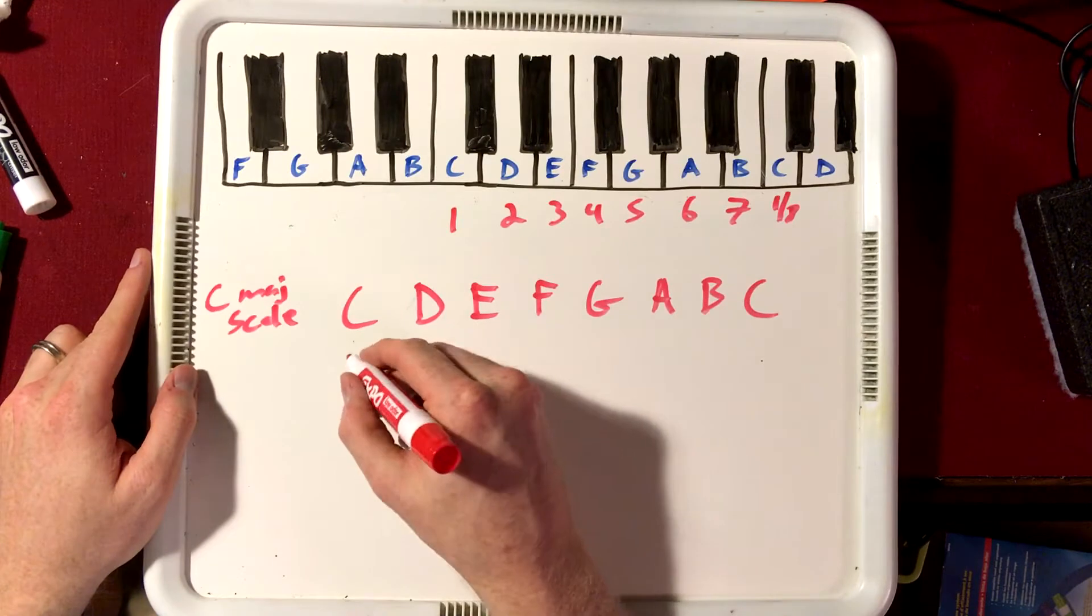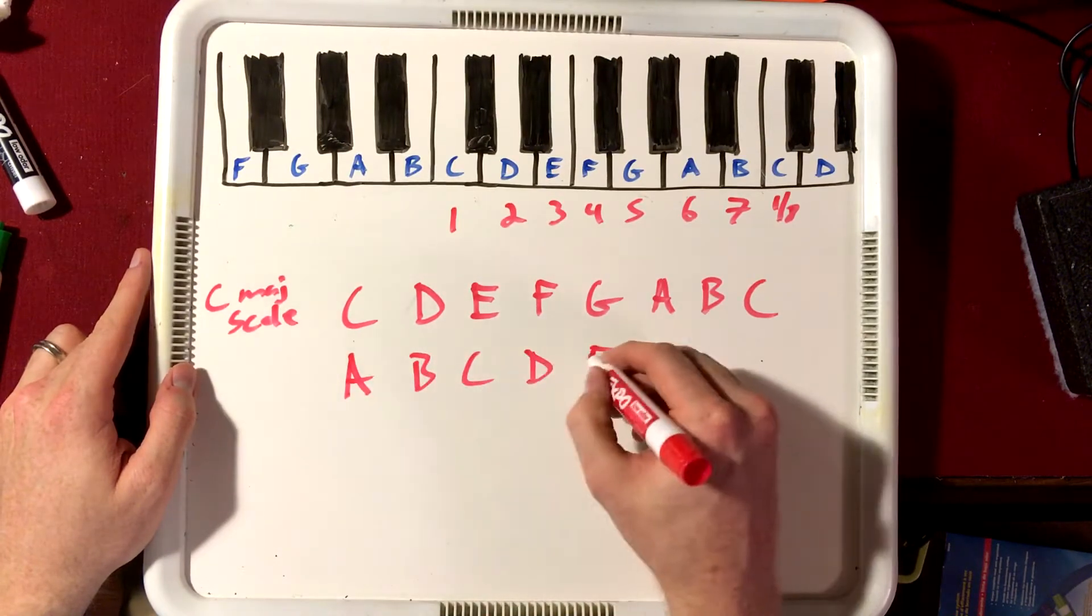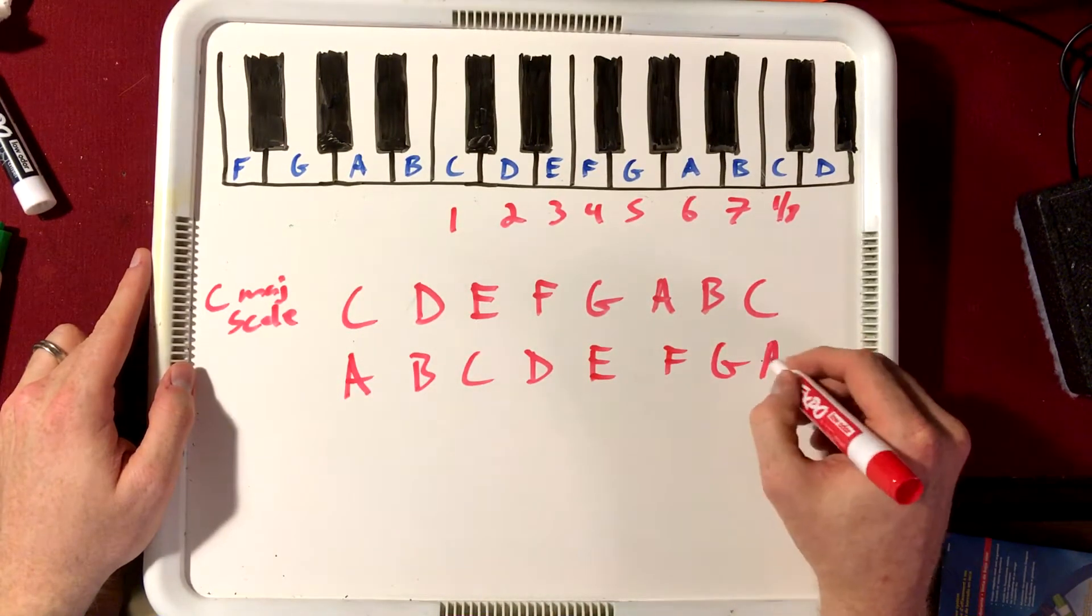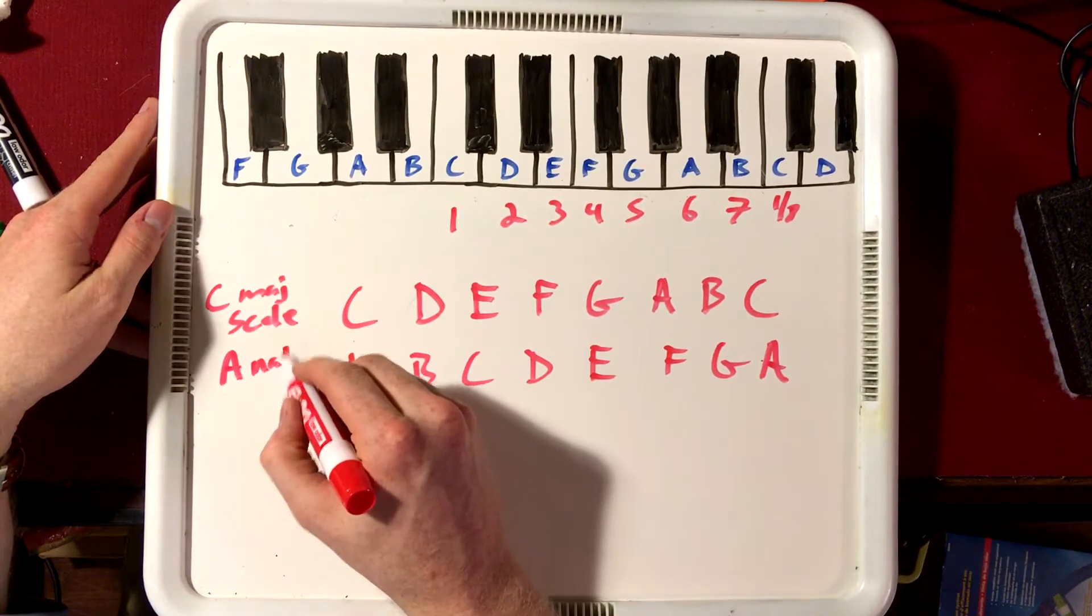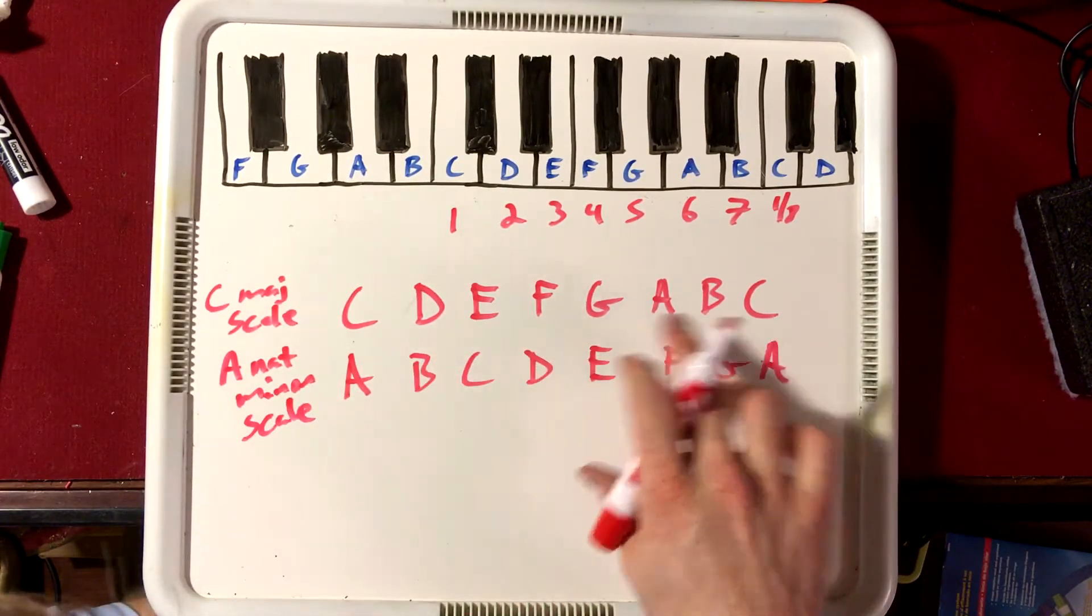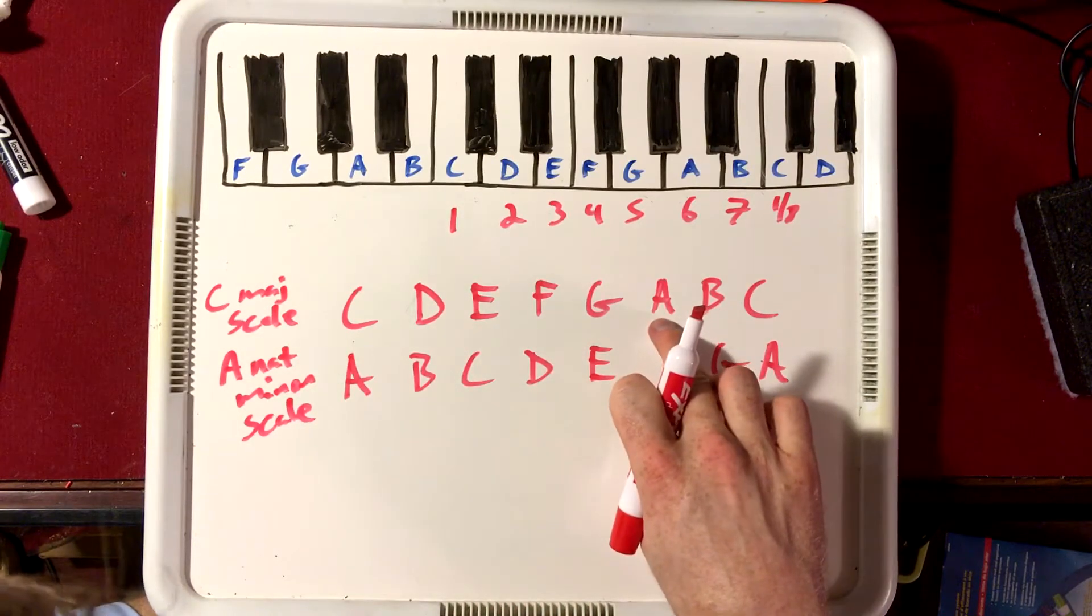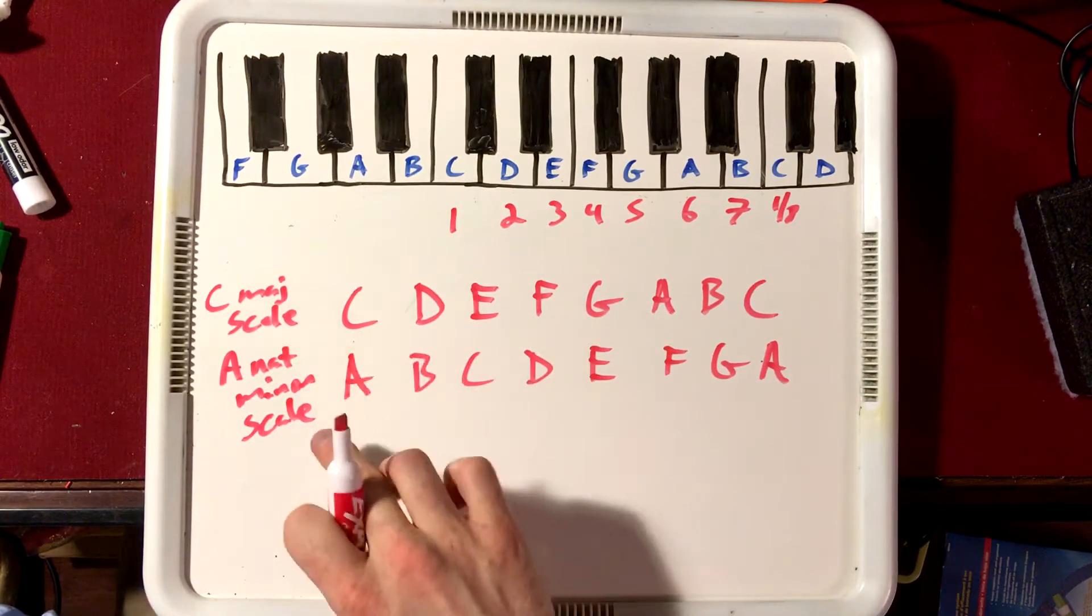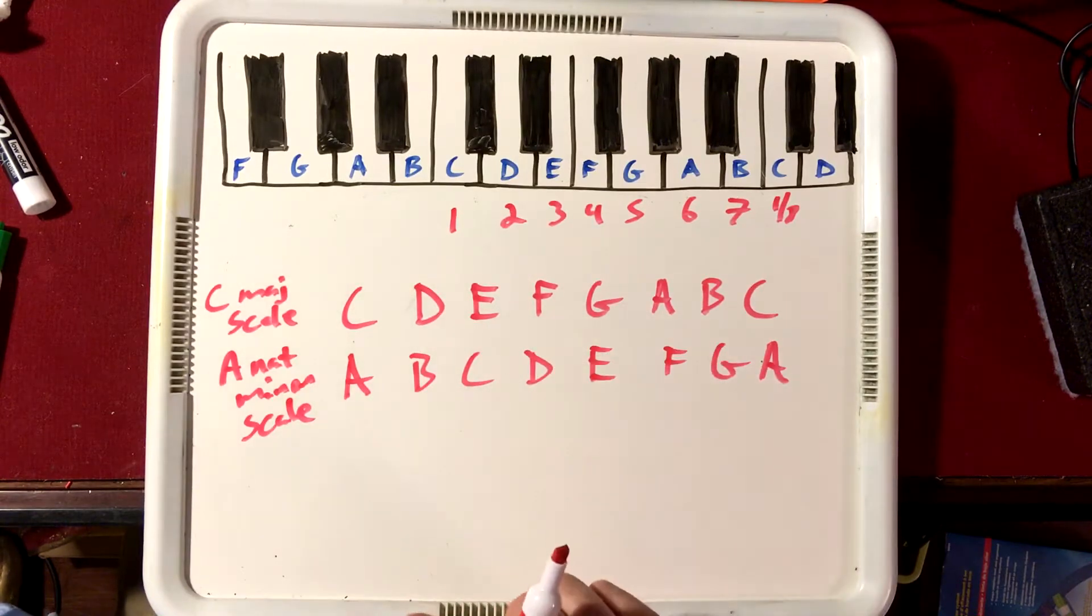I'm going to write out the natural minor here. It's A, B, C, D, E, F, G, and then we're back to A. This is our A natural minor scale. Now, how did I know which one to start on? So basically I started on the A instead of on the C. So how do you know which note is your natural minor?